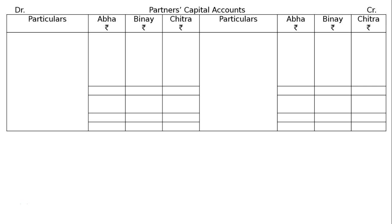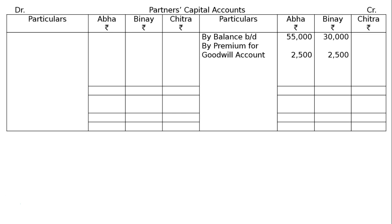Draw the full format of partners' capital accounts. On the credit side: balance brought down — Rs. 55,000 for Abha and Rs. 30,000 for Vinay. Employees' provident fund is a liability, don't touch it. By premium for goodwill account: Rs. 2,500 each. By workman's compensation fund — this is undistributed profit with no liability — distributed and credited in old ratio among old partners. On the debit side: stock taken by Abha and Vinay reduces their capitals (debit capital accounts, credit stock account).